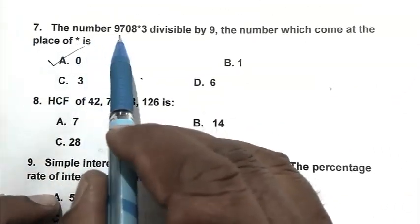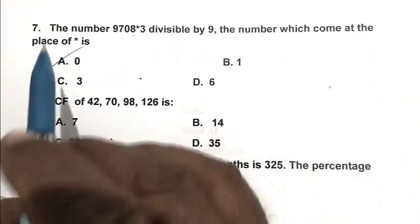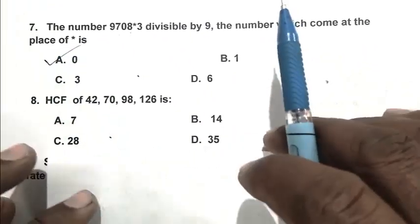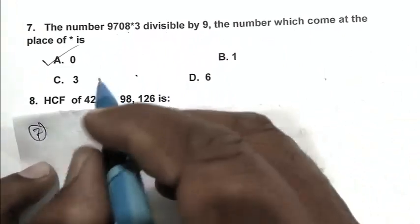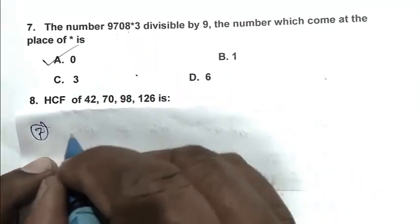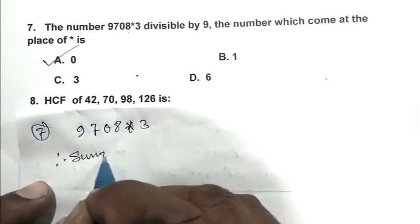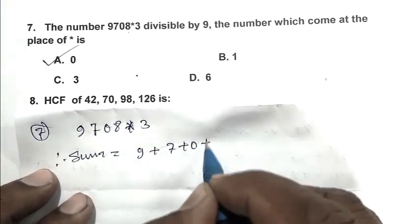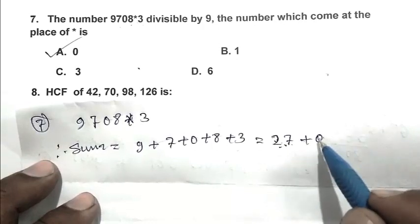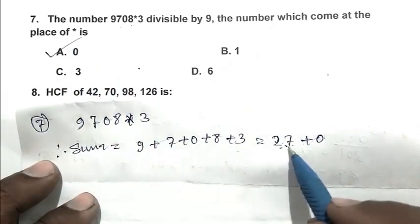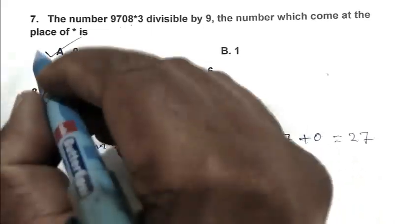Question number 7: The number 9708 star 3 divisible by 9, the number which comes at the place of star is. From rule of division we know that sum of all digits of a number is divisible by 9. So number is divisible by 9. So first we take the sum of all the digits. So sum is 9 plus 7 plus 0 plus 8 plus 3, that is 27. So if we take 0 in place of star, the sum of all the numbers is 27, which is divisible by 9. So A is the right answer.